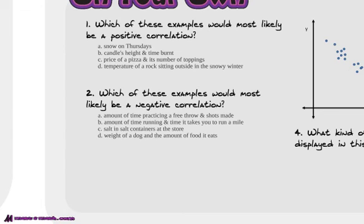Which of these has a negative correlation? The amount of time practicing a free throw and the shots you make, the amount of time running and the time it takes you to run a mile, and salt and salt containers at a store, weight of a dog versus the amount of food it eats. Which one of these is a negative correlation?